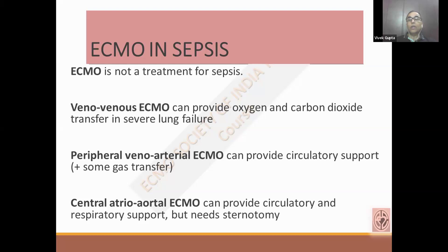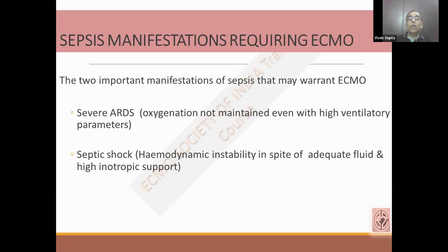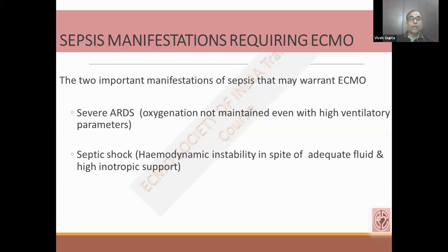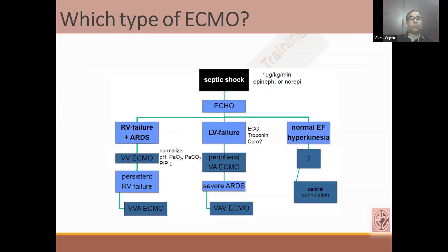Central cannulation requires sternotomy, and most of these patients will already have progression of coagulopathy, so there is more risk of bleeding. There are two important manifestations of sepsis where ECMO can be helpful. One is severe ARDS, where despite all measures including high ventilatory settings, the patient cannot maintain oxygenation, work of breathing is increasing, compliance is decreasing, and it is difficult to ventilate despite proning. The second subset is patients with cardiac myocardial dysfunction, hemodynamic instability despite adequate fluid and high vasopressors, with severe myocardial dysfunction.